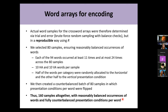We eventually selected 80 samples — 80 word combinations of 20 words each — ensuring reasonably balanced occurrences: each of the 94 words occurred at least 11 times and at most 24 times across the 80 samples. Ten words per sample were horizontal association words and the other 10 vertical association words, with half of each category randomly allocated to horizontal and half to vertical presentation. We then created a counterbalanced batch of 80 further samples in which presentation conditions per word were flipped, requiring 160 participants altogether.